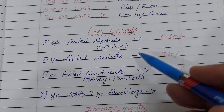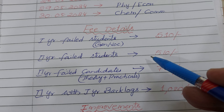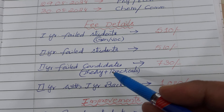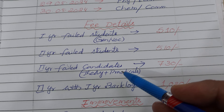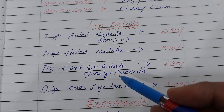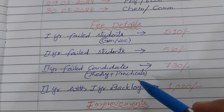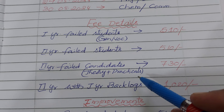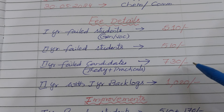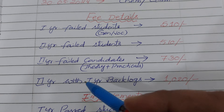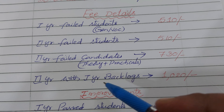For second year failed candidates, also irrespective of the number of subjects, the fee is 510 rupees. However, if the second year failed candidate has failed in practicals or was absent for practicals, then he has to pay 730 rupees.